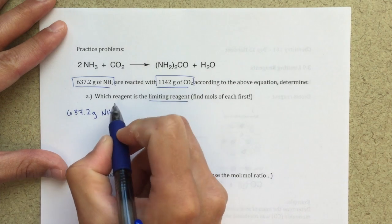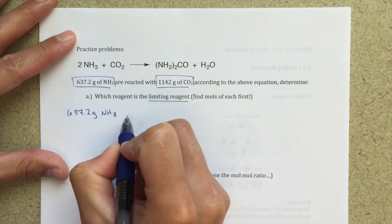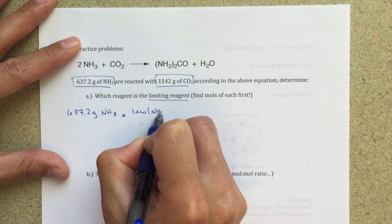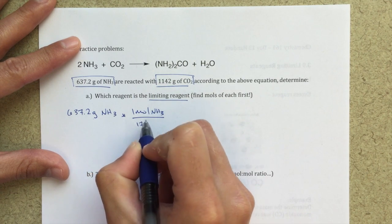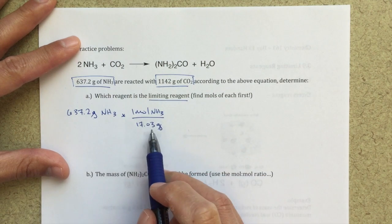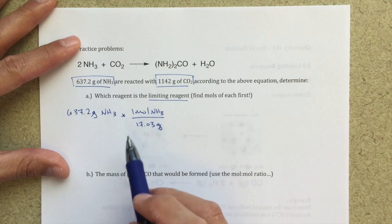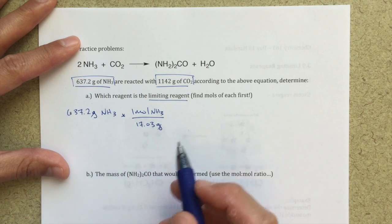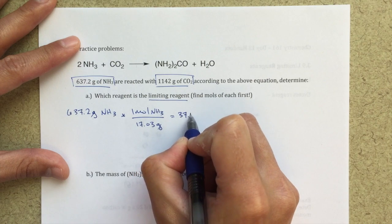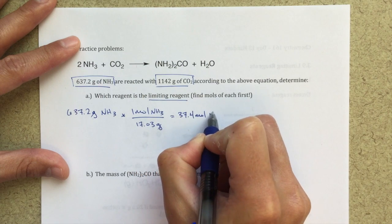So if I have 637.2 grams of NH3, and I want to convert that into moles of NH3, then I'm going to use the molecular mass of NH3, so 17.03, that's the grams per mole for NH3. I can cancel my units of grams, and I'll be left with 37.4 moles of NH3.